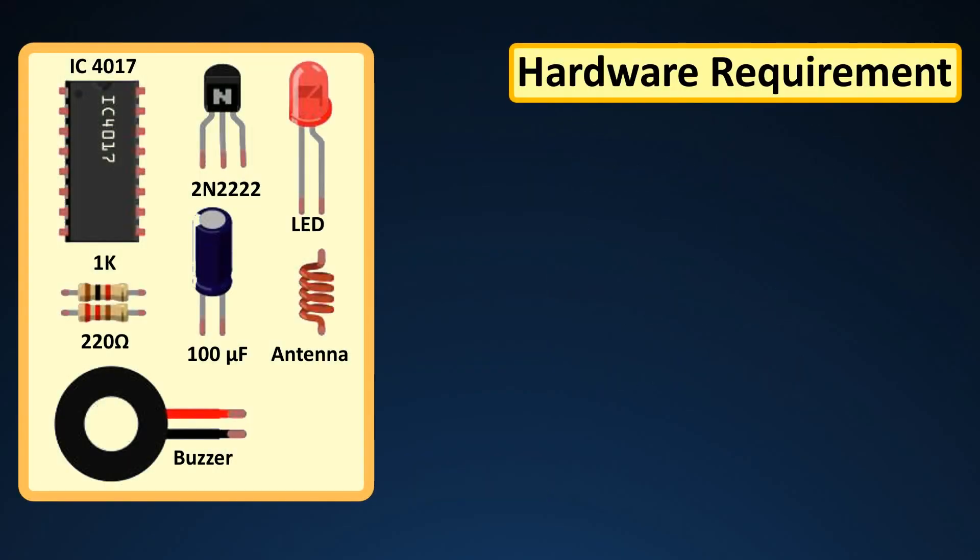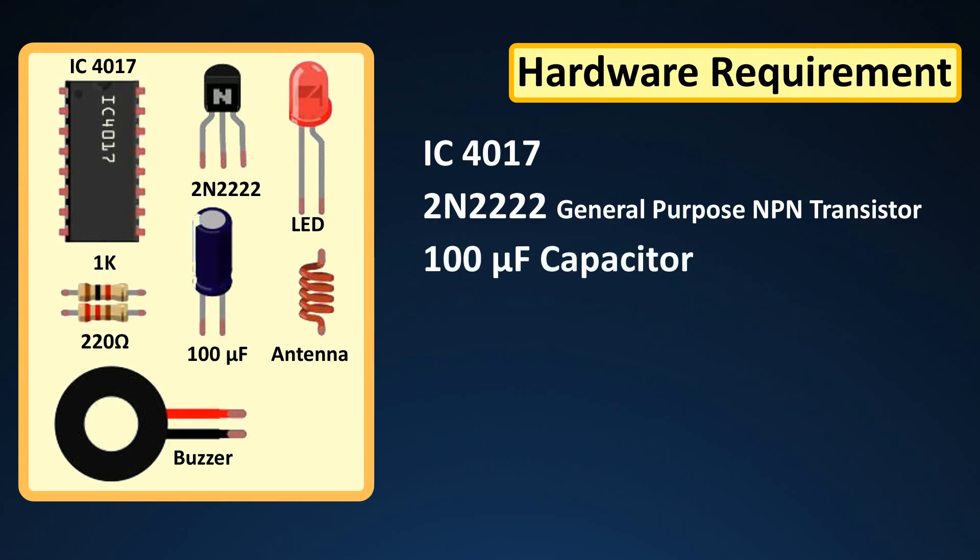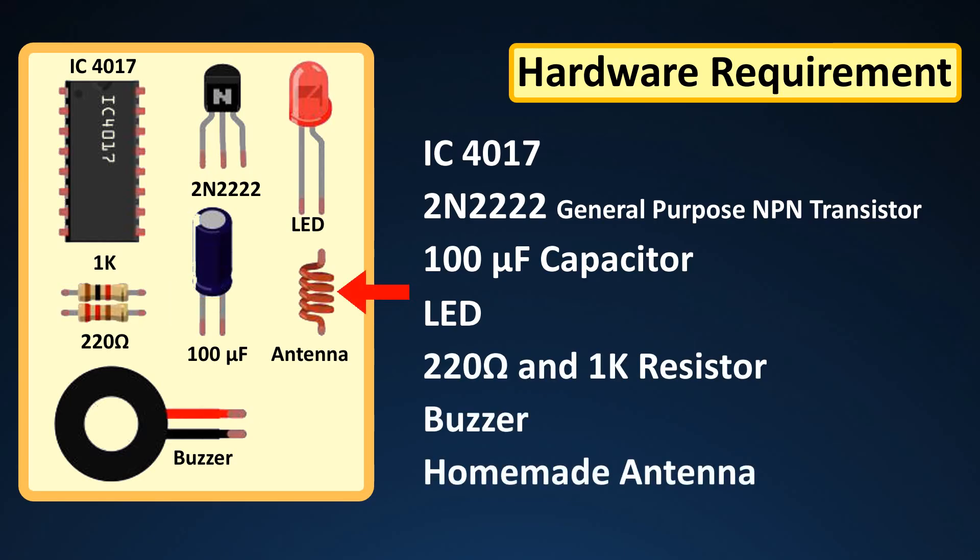For this setup we need a 4017 IC, a general purpose NPN transistor, 100uF capacitor, LED, a 220 ohm and a 1K resistor, a buzzer and a homemade antenna.